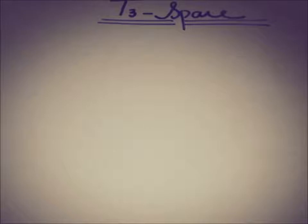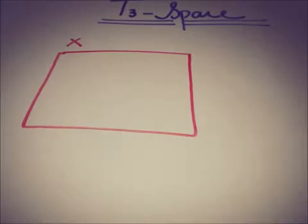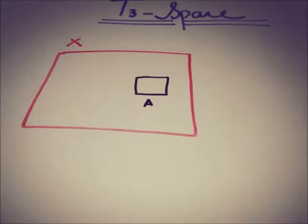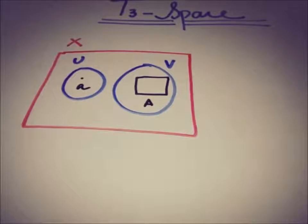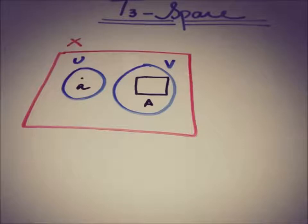If we have a topological space X, any closed set A, and any point in the topological space X that is not in that closed set — let's call it A — then this space is said to be a regular space if we have two open sets U and V such that the point belongs to open set U, the closed set A is a subset of open set V, and the intersection of U and V must be empty.